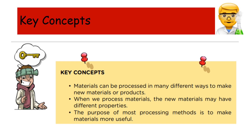Here are a few key concepts. Materials can be processed in many different ways to make new materials or products. When we process materials, the new materials may have different properties. The purpose of most processing methods is to make materials more useful.